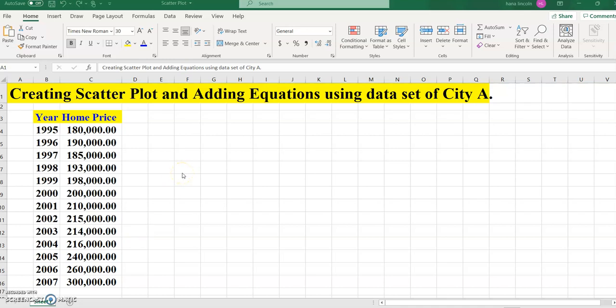In this video I'm going to talk about creating scatter plots and adding equations using the given data set of City A. As you see over here, the data set displays the year between 1995 and 2007 as well as the price on the second column. Using this given data set, I'm going to show you how to create scatter plots.